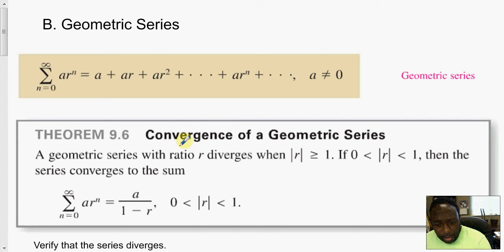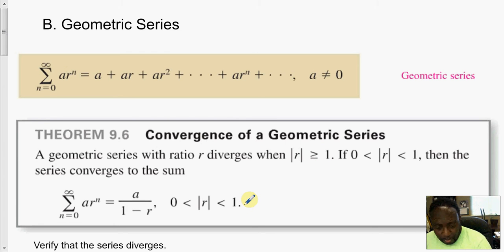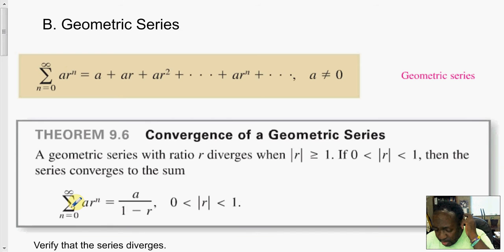The convergence or divergence of a geometric series depends on pinpointing R, the ratio. If R is greater than or equal to 1, the series diverges. If the absolute value of R is between 0 and 1, we get convergence. It's convergent with a sum — and not many series let us pinpoint the actual sum. We can do it with telescoping, and we can do it here with the geometric series.